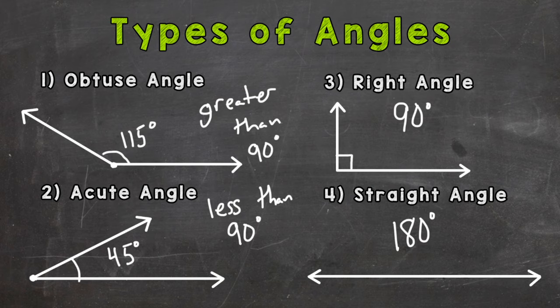An acute angle is less than 90 degrees. A right angle equals exactly 90 degrees. And a straight angle is exactly 180 degrees.